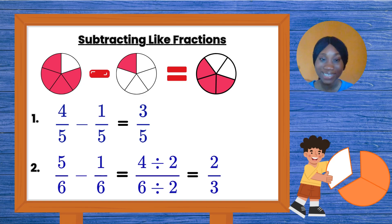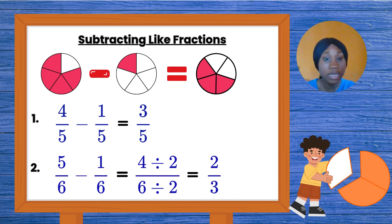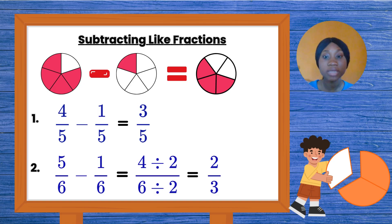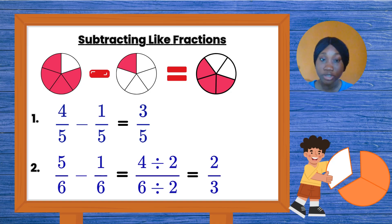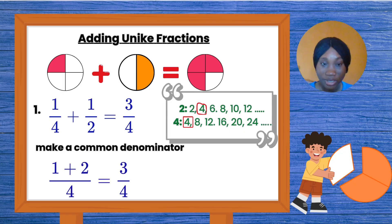Second example: I have five over six minus one over six. We're only going to subtract the top numbers and copy out the bottom. Five minus one gives me four, and I copy out the bottom number, which is six. But take note — I have four over six. That is an even number over another even number, which means it can be broken down to make it smaller. When you do this, we call it simplify. To simplify four over six, I look for a number that can divide four perfectly and also divide six perfectly — that number is two. Two goes into four two times, and two goes into six three times. So my final answer is two over three.